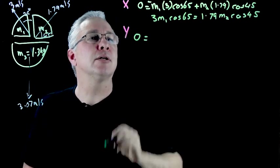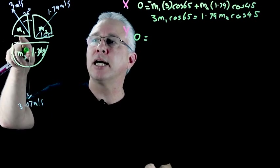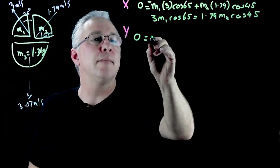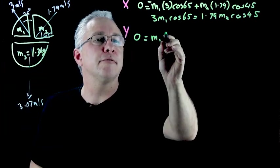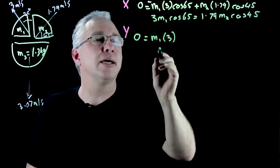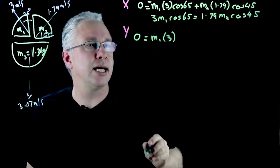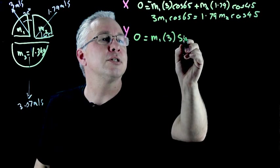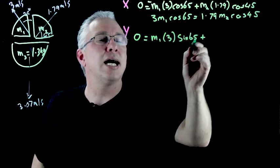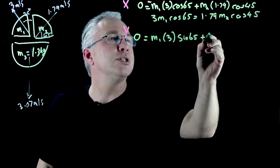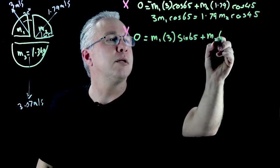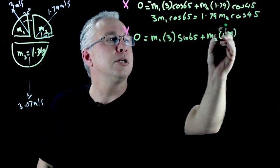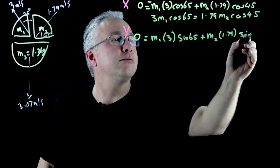So we have zero is equal to, in this case we have this one here which is our m1 multiplied by of course our 3 and multiplied by, in this case we want the component that is in the upward direction and that's going to be equal to the sine of 65. And then we've got to add this one as well which is equal to m2 multiplied by 1.79 multiplied by the sine of 45.